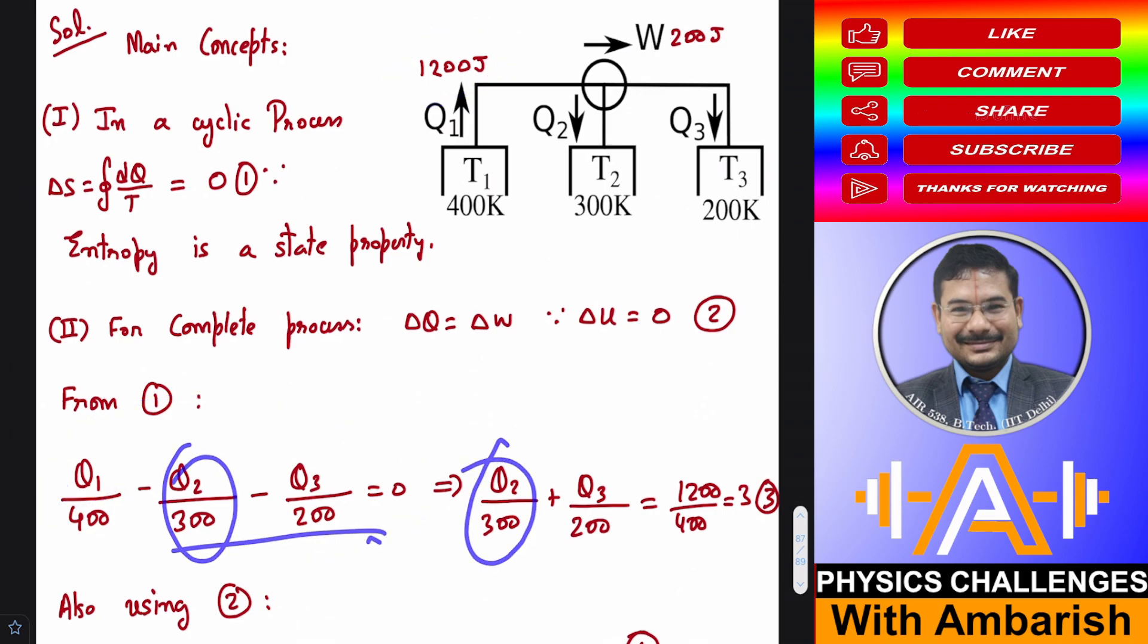So Q2 by 300 plus Q3 by 200 that is equal to Q1 by 400 that is equal to 1200 by 400 which is 3. So this is equation number 3. And then using the condition 2.